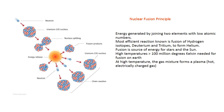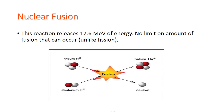Nuclear fusion generates energy by joining two elements with low atomic numbers. The most efficient known reaction is fusion of hydrogen isotopes deuterium and tritium to form helium. Fusion is the energy source of stars and the sun. Temperatures greater than 100 million degrees Kelvin are needed for fusion on Earth; at these temperatures the gas mixture forms a plasma — a hot, electrically charged gas. This reaction releases 17.6 MeV of energy.